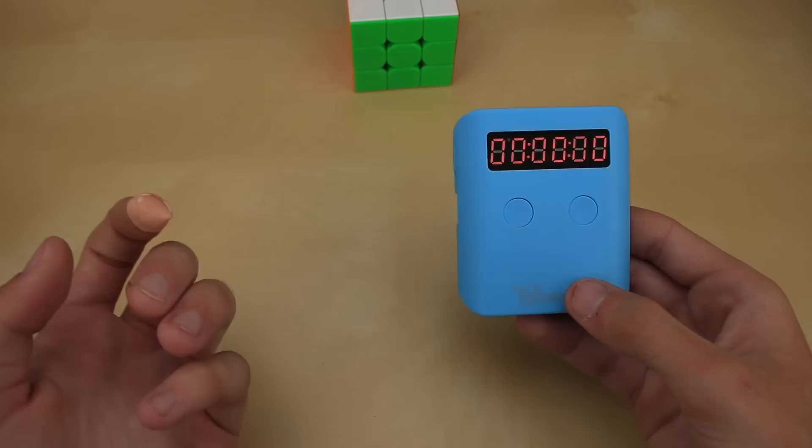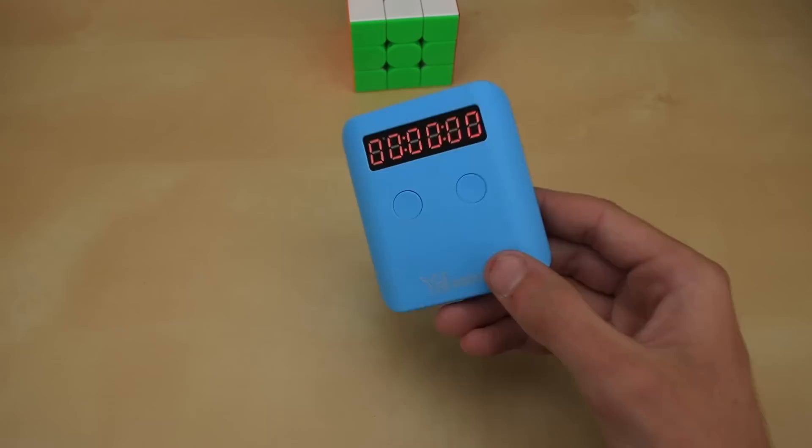It comes in three colors: blue, yellow, and gray, and it comes with this little wrist strap and attachment point in case for some reason you wanted to carry it around on your wrist.